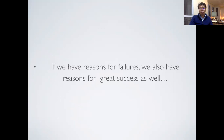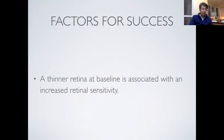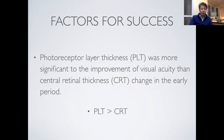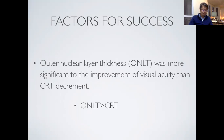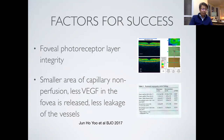If we have reasons for failures, we also have reasons for great success. A thinner retina is associated with increased retinal sensitivity. Positive findings for improved vision under treatment include the consideration that photoreceptor layer thickness was more significant to improvement in visual acuity than central retinal thickness — so PLT is more important than CRT. The outer nuclear layer thickness was also more significant to improvement in visual acuity than CRT decrement. Integrity of the foveal receptor layer may be necessary to regain good vision, and less area of non-perfusion points to better vision.